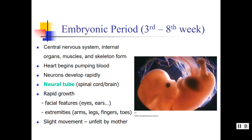The zygote becomes an embryo in about the third week through to the end of the eighth week, or the second month of pregnancy. If the germinal period was about establishing the environment, the nutrients, and the home, then the embryonic period is about laying down the foundation — laying down all the body parts we need to become a human: the central nervous system, organs, muscles, skeleton, heart, neurons in the brain, facial features, and extremities. This period is especially susceptible to teratogens.